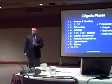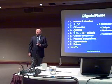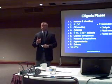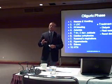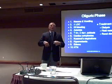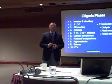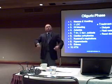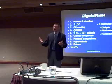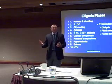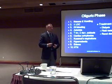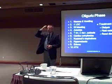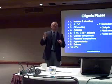Acute renal failure goes through phases, the first of which is the oliguric phase. In the oliguric phase, your patient is going to look like a patient who has chronic renal failure — having oliguric decreased urine output, plus symptoms of an increase in urea nitrogen. BUN starts to build up in the body because it's not being filtered out, and urea nitrogen is very irritating to the tissue. Urea nitrogen causes irritation of the brain and the patient will have central nervous system depression.